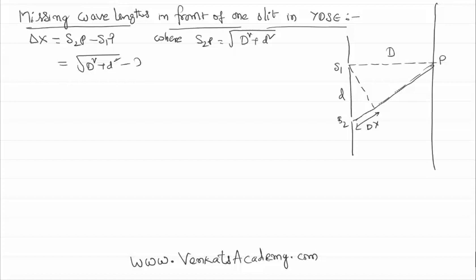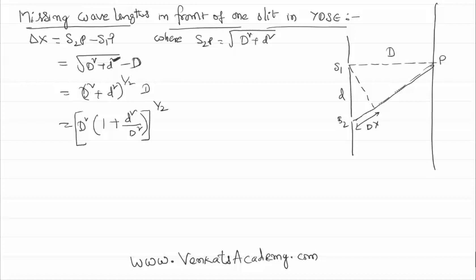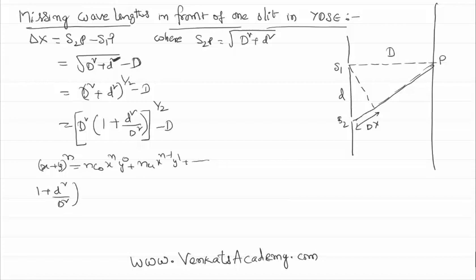We want to simplify this further. Taking capital D squared common from inside the square root, we get capital D times the quantity 1 minus d squared by capital D squared, to the power of one half, minus d. We will simplify this further by using the binomial expansion theorem: (X + Y) to the power N equals NC0 times X^N times Y^0 plus NC1 times X^(N-1) times Y^1 and so on. Here we apply this to 1 plus small d squared by capital D squared, all to the power of one half.